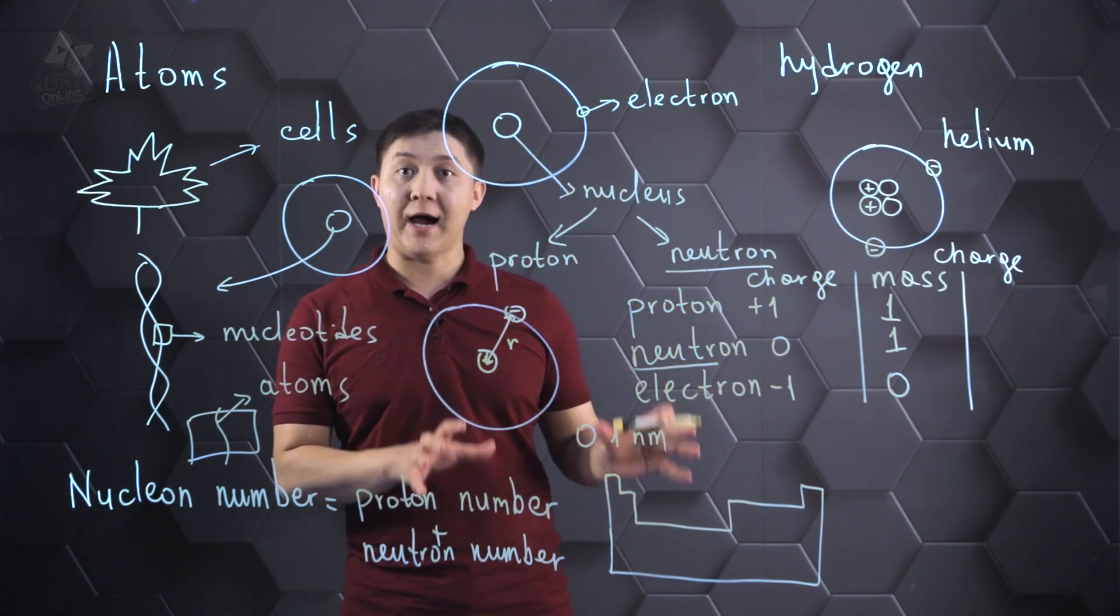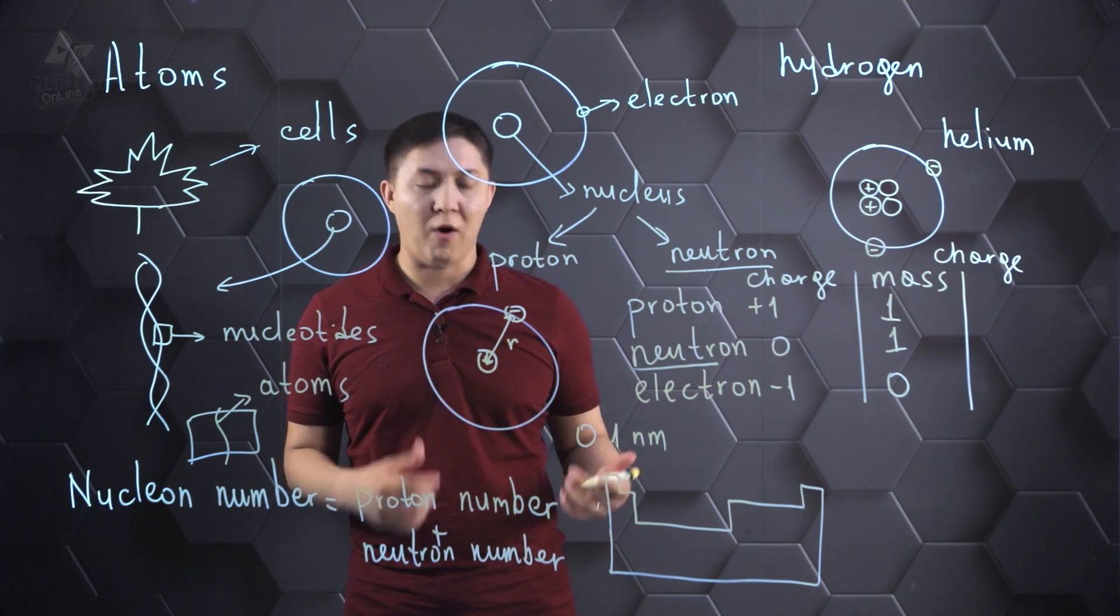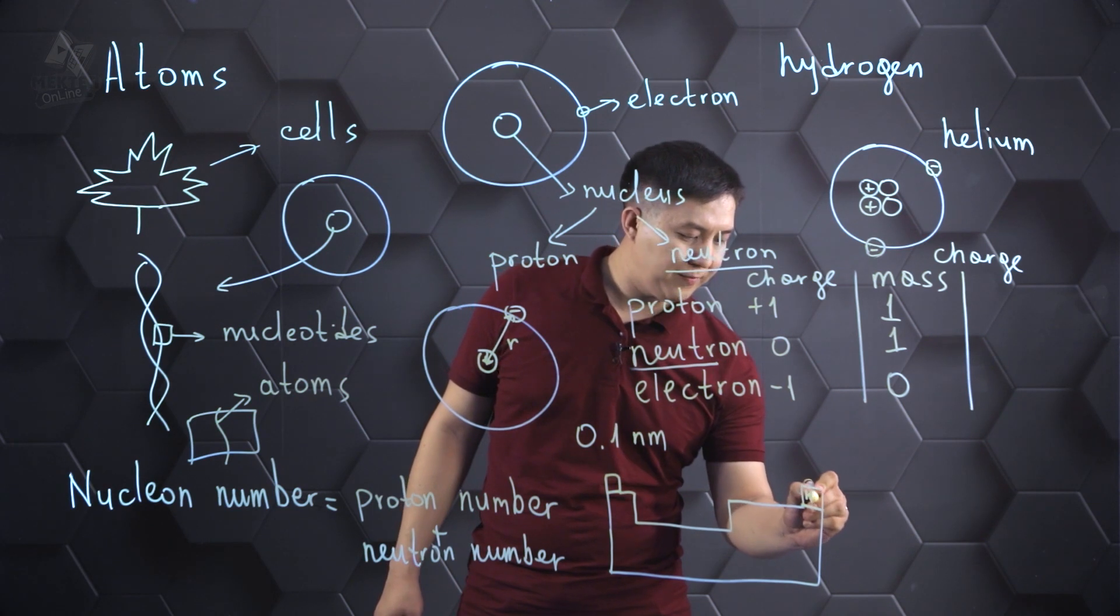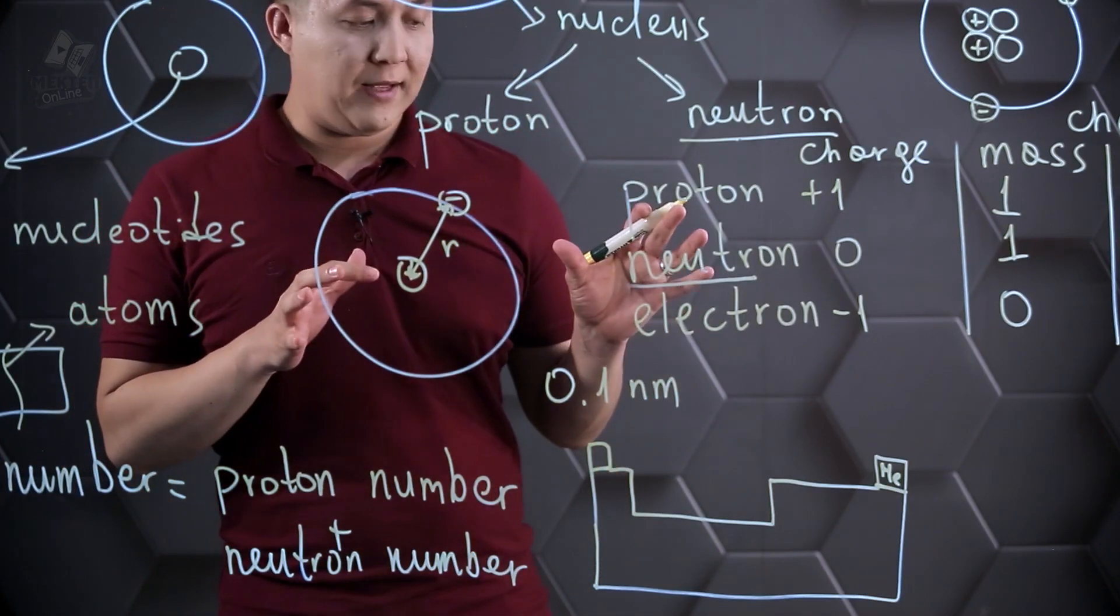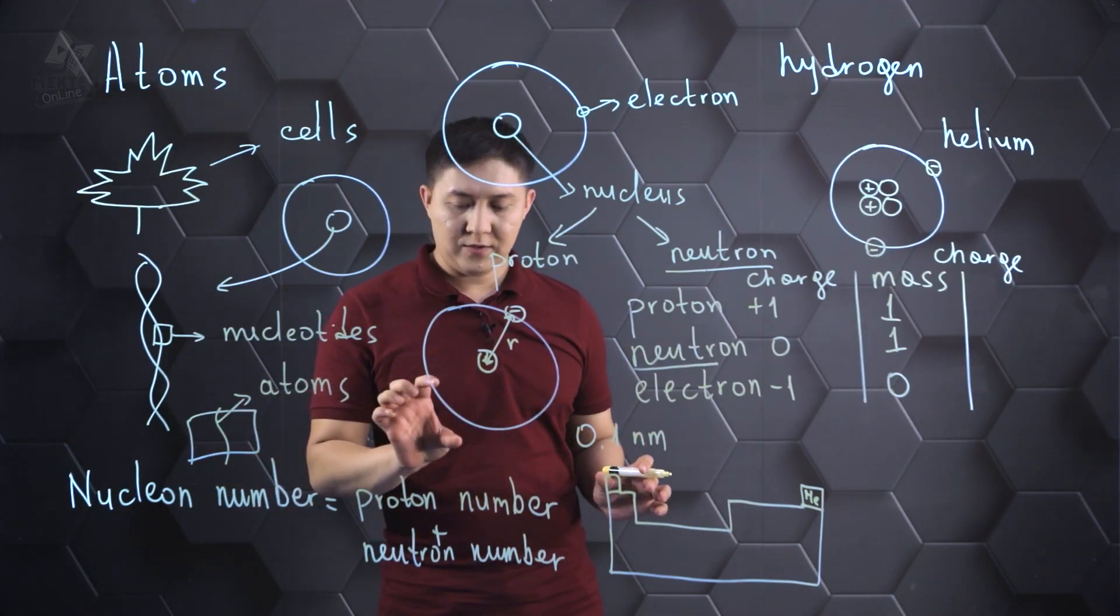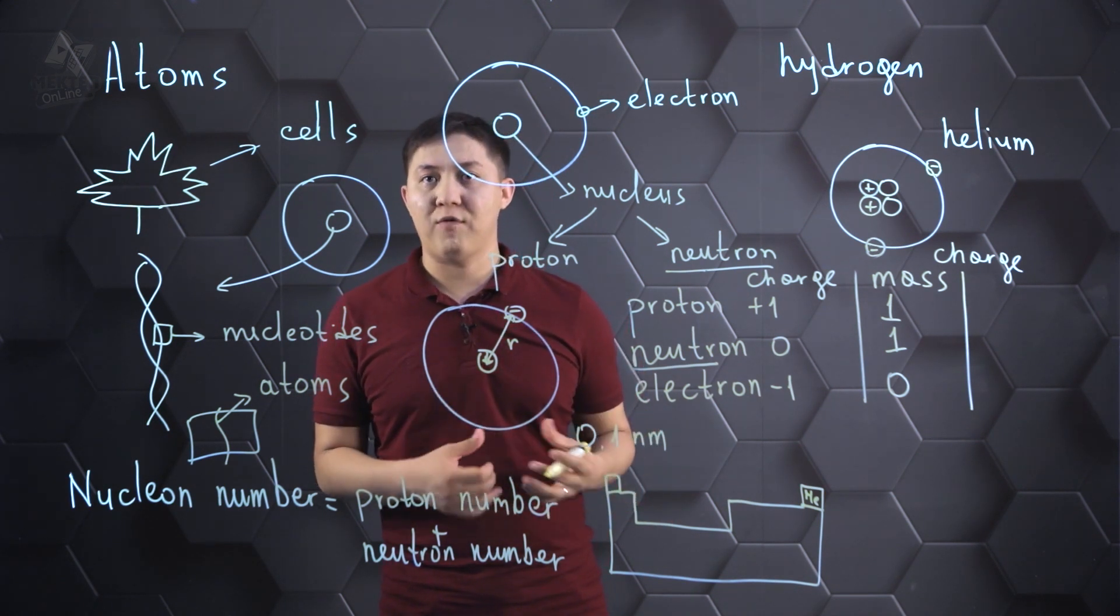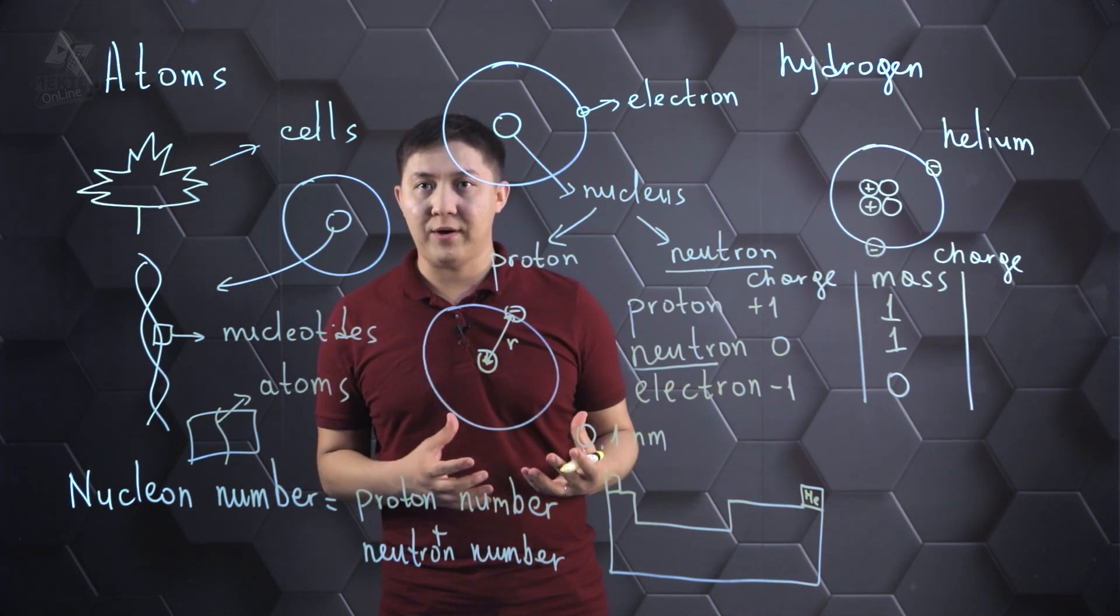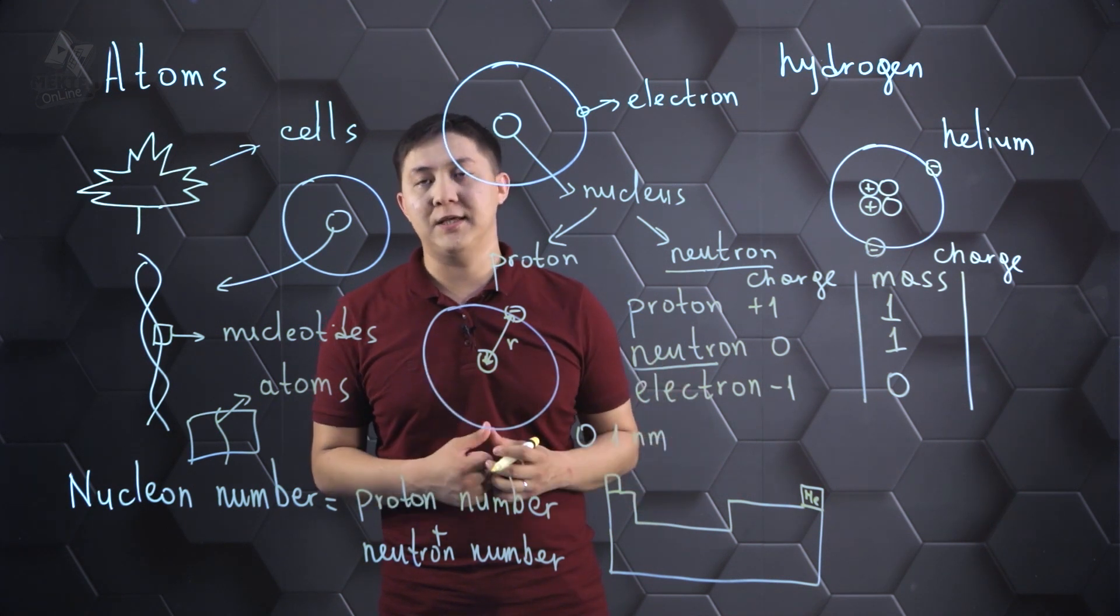We have different types of atoms called elements in each box of this table. And helium is located here. All the elements have nucleon number and atomic numbers. Atomic number is the number of proton. So, proton number tells us what element is depicted in this box.